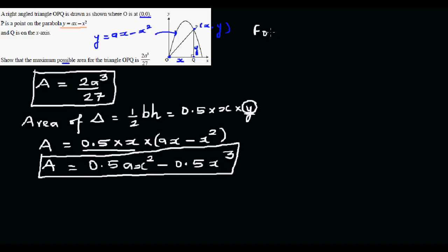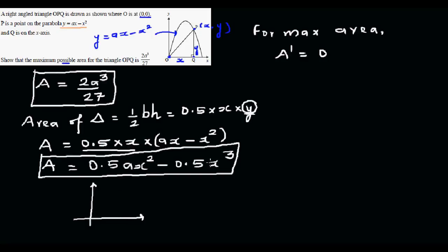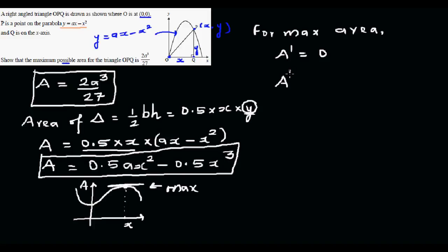For maximum area, the derivative A prime equals 0. Graphically, the area function is a negative cubic equation, so the graph has a local maximum where the gradient is zero. At that point of X, you get the maximum area. So we differentiate the area function and set it equal to zero.